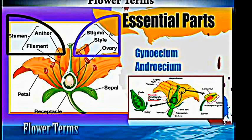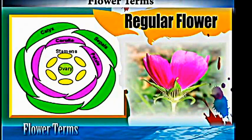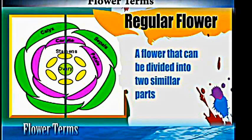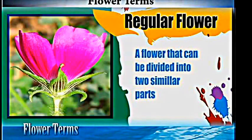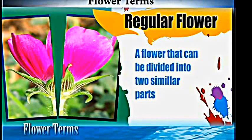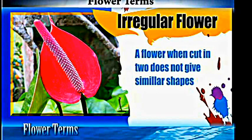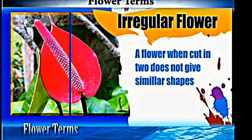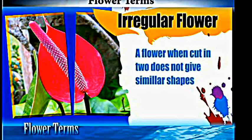Another term we use is the 'regular flower.' A regular flower is a flower that can be divided into two similar halves — you cut it through the middle and one side is similar to the other side. But if you cut through the middle and the two parts are not similar to each other, that one is called an 'irregular flower.'